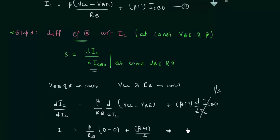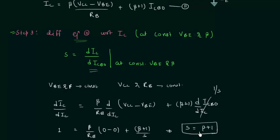Simplifying, the stability factor S equals β+1. This is the stability factor for fixed bias configuration. A small change in β will change the stability factor, and fixed bias configuration is a very sensitive biasing scheme because of this reason.